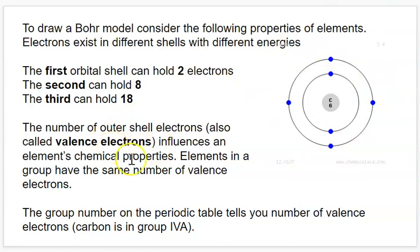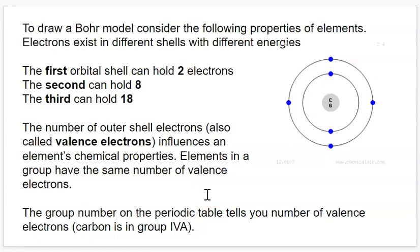An important part about an atom in general is its valence electrons. When we did the card sort activity before and we saw those little sticks poking out of each of the atoms, those represent the valence electrons. Those are really important because they influence the element's chemical properties. That's why everything in a group has similar properties and also had the same number of sticks. The amount of valence electrons controls how an element can behave and how it can bond.